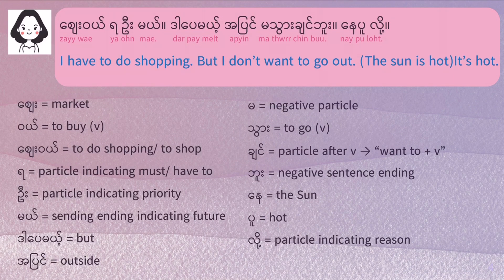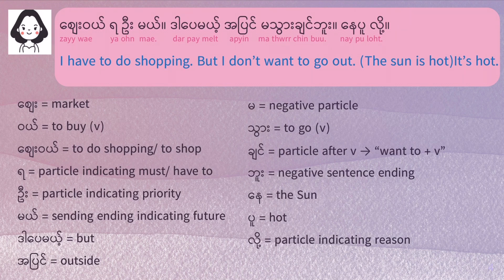The next sentence is 'Dabi me, a piye m tua chieng bu.' 'Dabi me' means 'but.' 'Chieng' is a particle — when you add 'chieng' after a verb, it means 'want to do' that verb. So 'tua chieng' means 'want to go,' and 'ma tua chieng bu' means 'don't want to go.' 'Piye' is outside, so it literally means she doesn't want to go outside. She has to go shopping, but she doesn't want to go out.